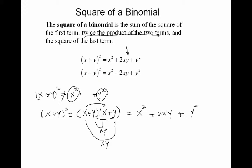Remember that if you have a minus instead — if this were x minus y — the only difference is the two middle terms would be minus xy and minus xy, resulting in minus 2xy. So remember these two formulas: x plus y squared equals the first term squared, plus two times the first term times the second term, plus the second term squared. You always have that 2xy term in the middle.